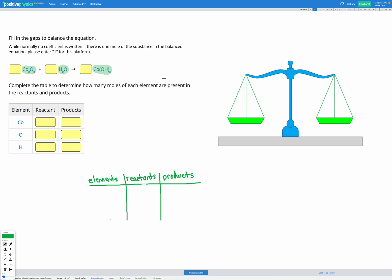So I'm going to go ahead and write out this equation a bit bigger. I've got Co2O3 plus H2O, and that's going to create Co(OH)3.